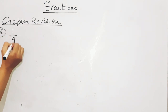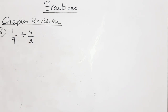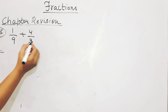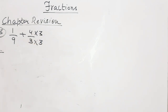Question number 3 is addition of fractions: 1 by 9 plus 4 by 3. Now, 1 upon 9 is a proper fraction because the numerator is less than the denominator. 4 upon 3 is an improper fraction because the numerator is greater than the denominator. Since the denominators are different, we take the LCM of 3 and 9.